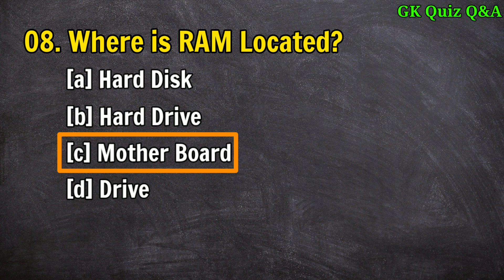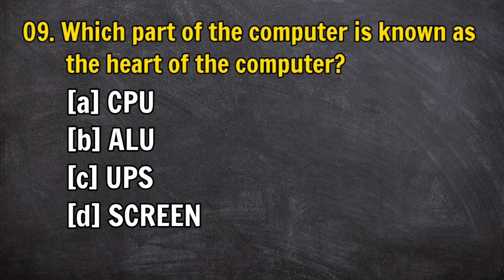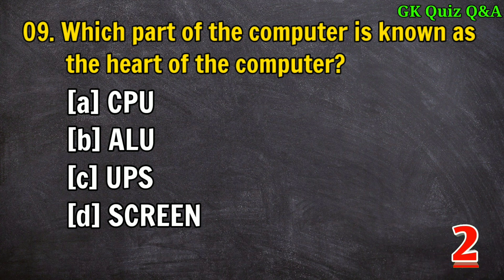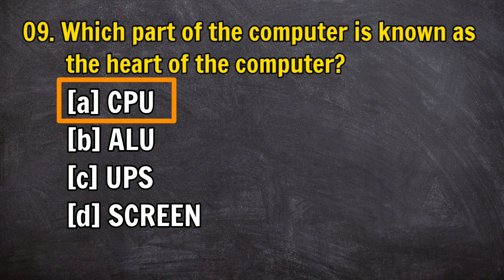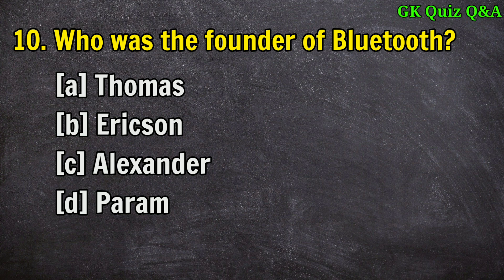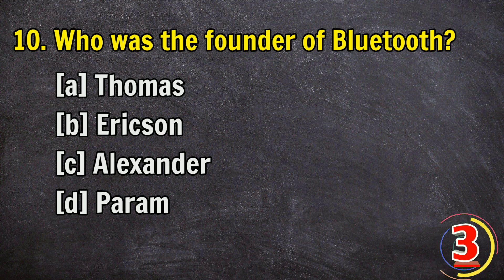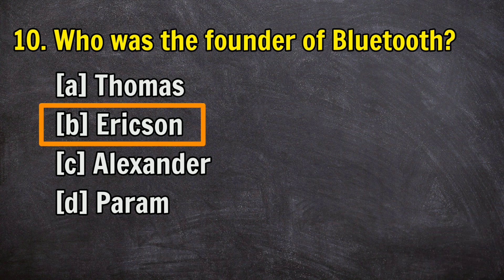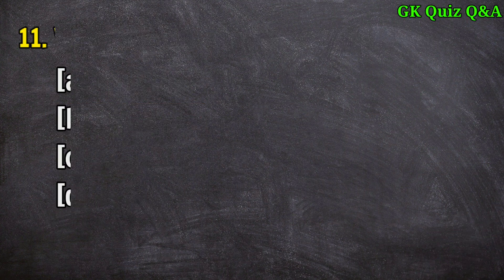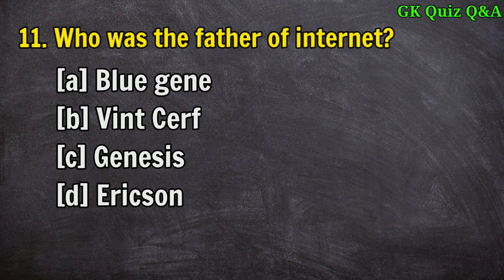Question 7: A desktop computer is also known as — answer B: PC. Question 8: Where is RAM located? Answer C: motherboard. Question 9: Which part of the computer is known as the heart of the computer? Answer A: CPU.